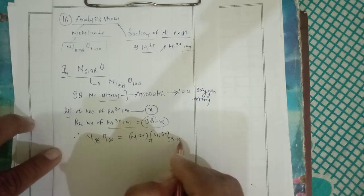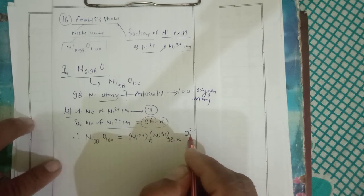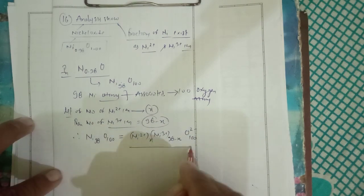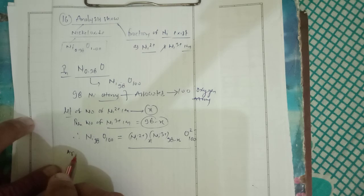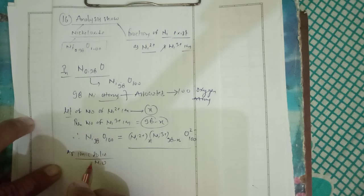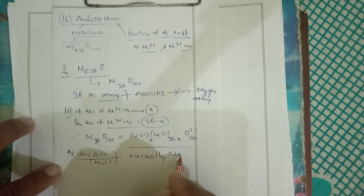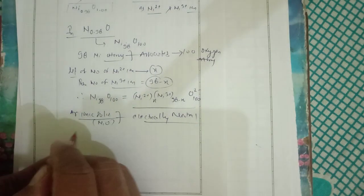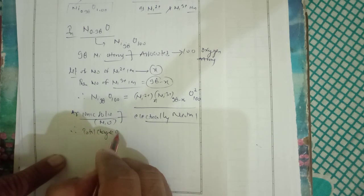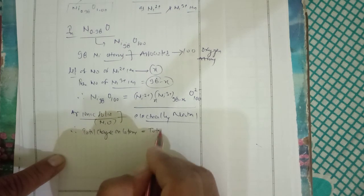O²⁻₁₀₀. As an ionic solid, NiO is electrically neutral. So therefore total charge on cation minus total charge on anion equals zero.